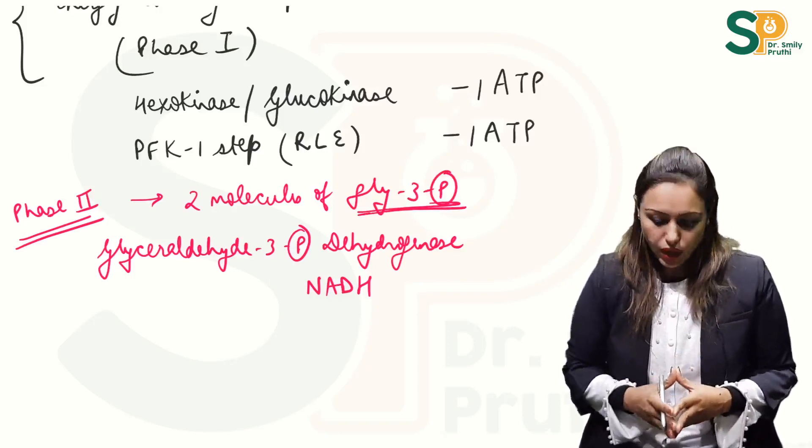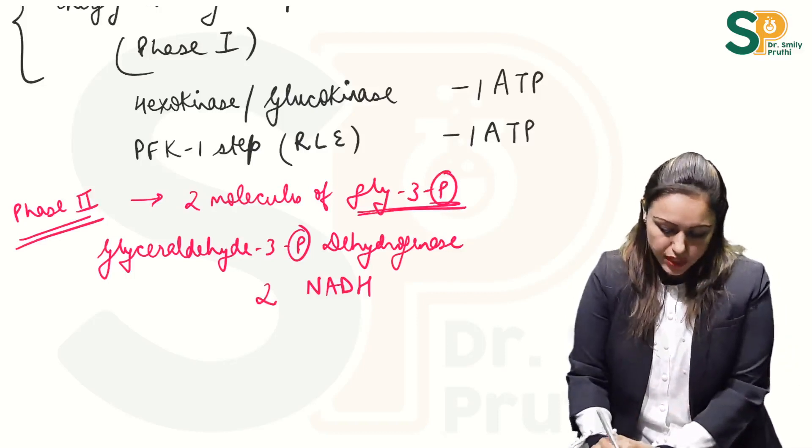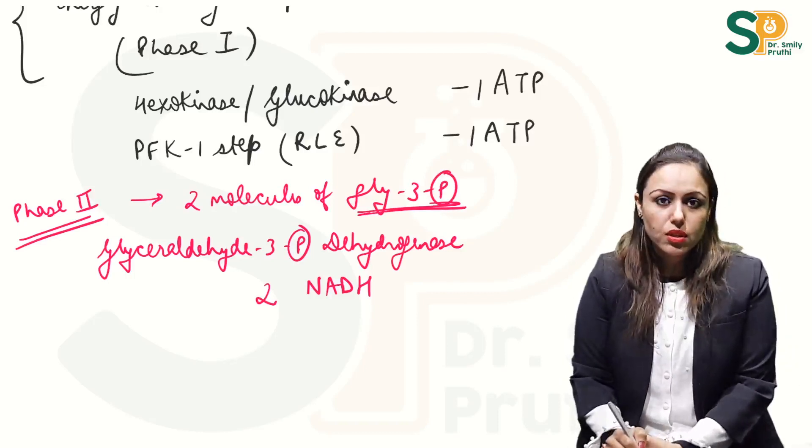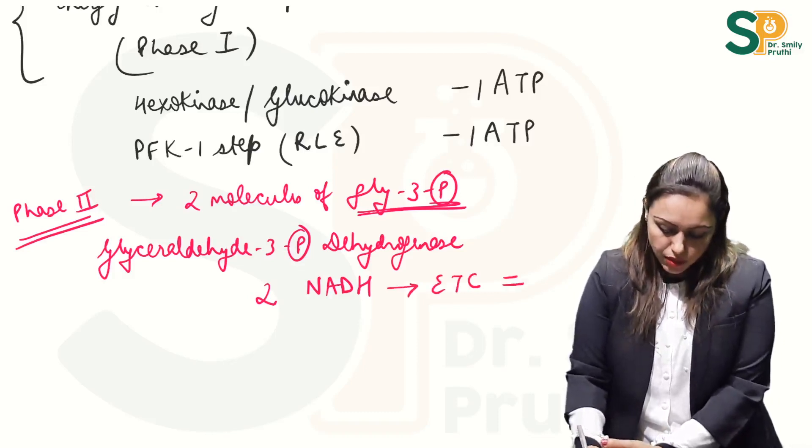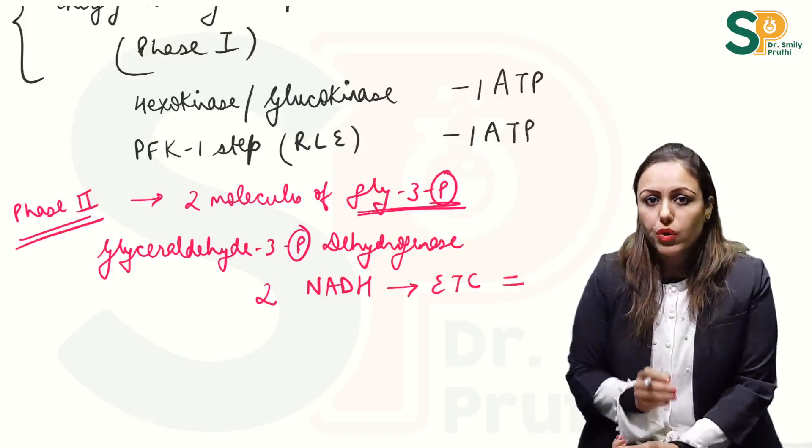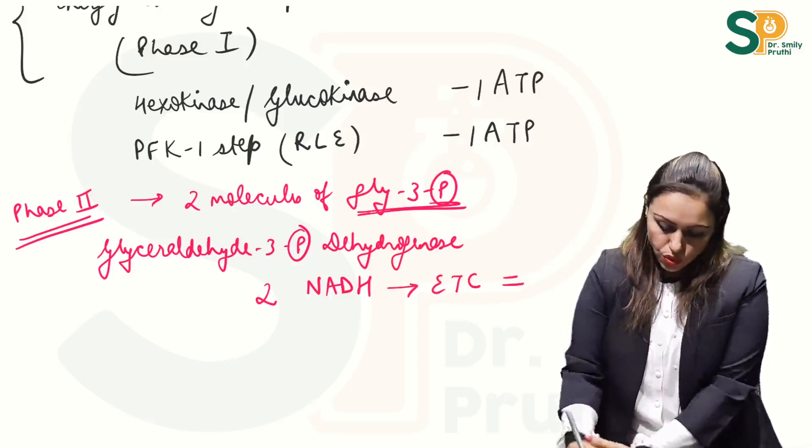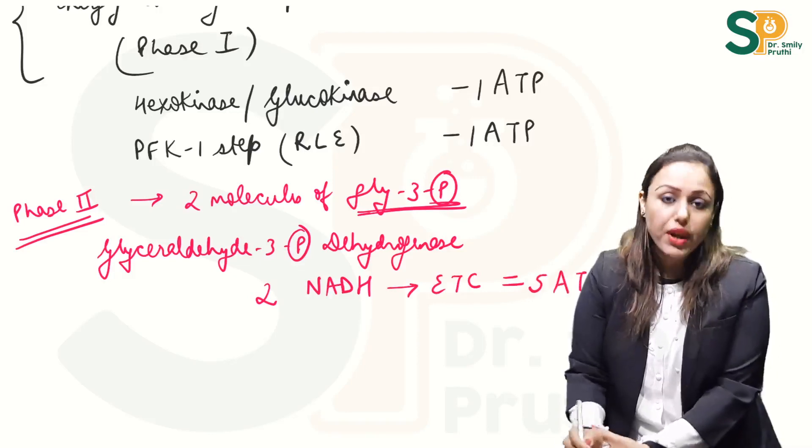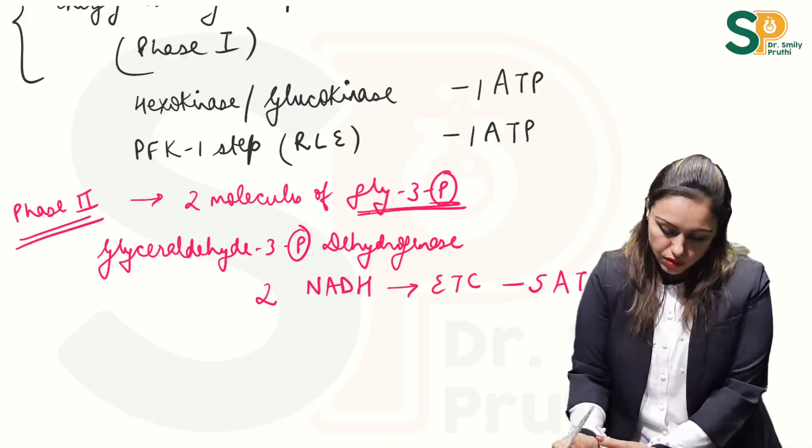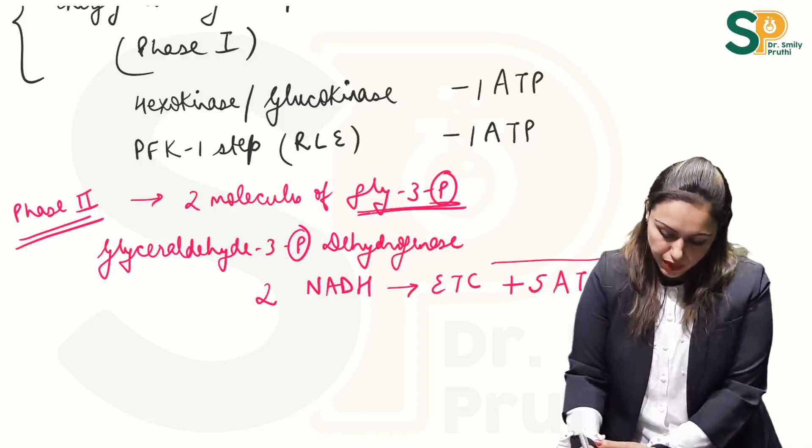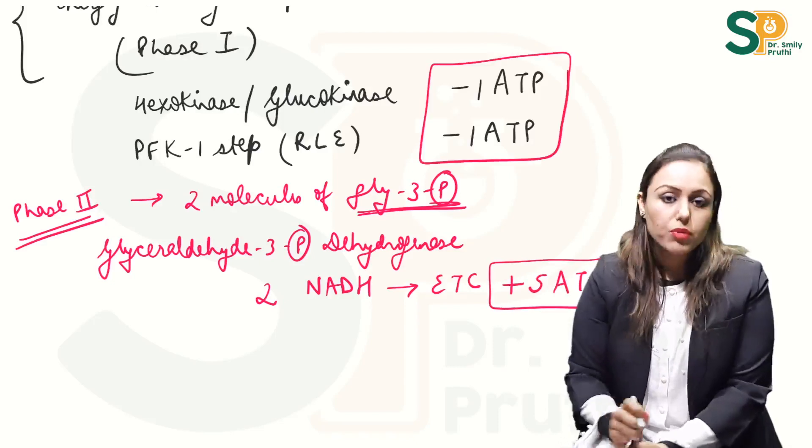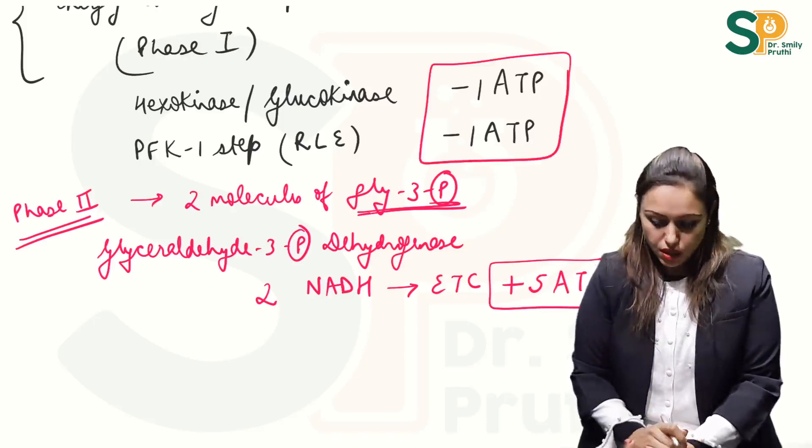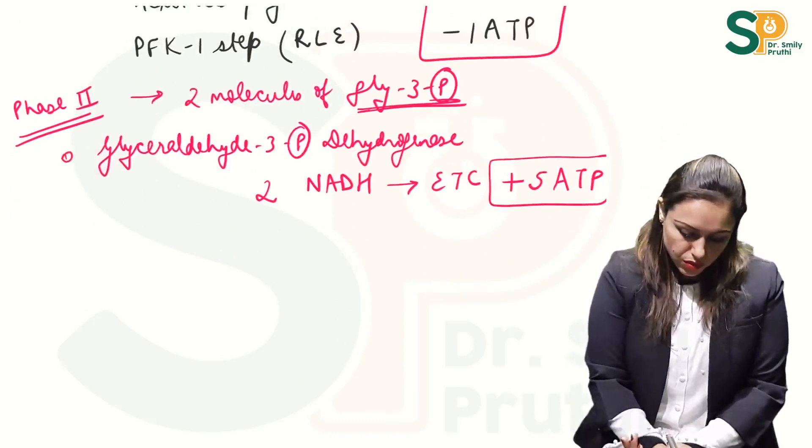Phase two starts with two molecules of glyceraldehyde-3-P so all the energetics in phase two is multiplied by two. So I will write it is 2 NADH. 2 NADH will go into ETC. 1 NADH gives you 2.5 ATPs so 2 NADH will give us 5 ATPs so here I will write plus 5 ATPs.